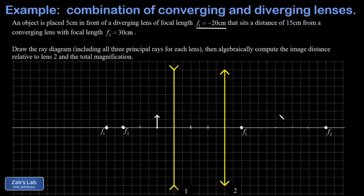Now that the introduction is out of the way, what's the point of the problem? We're going to do a complete ray diagram using all three principal rays at each stage to find the final image formed by the combination of these two lenses. We'll be as accurate as possible and use our ray diagram to approximate the final image distance and magnification. In the second part of the video, we'll algebraically determine the final image distance and total magnification, and hopefully see good agreement between the two approaches.